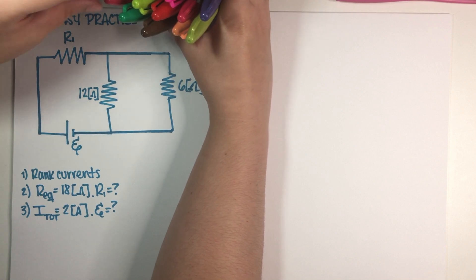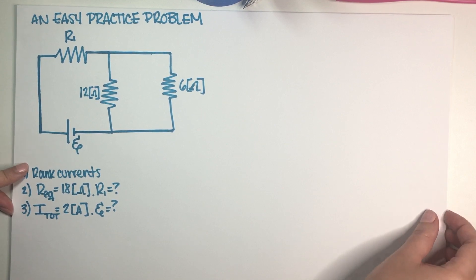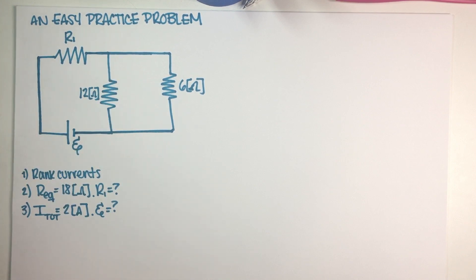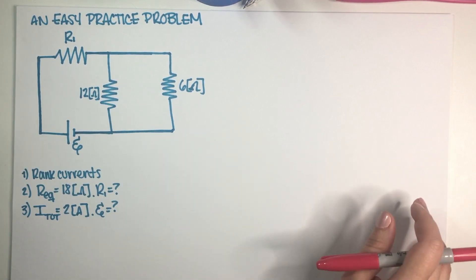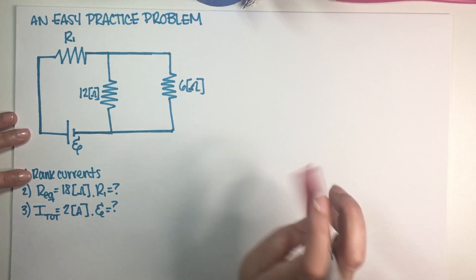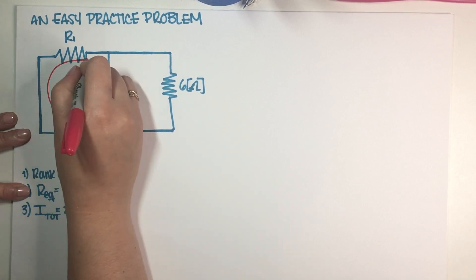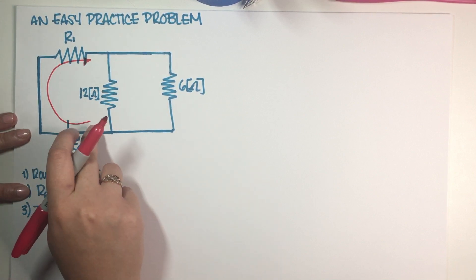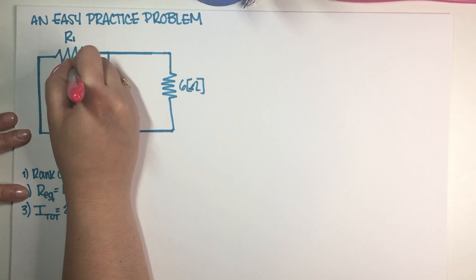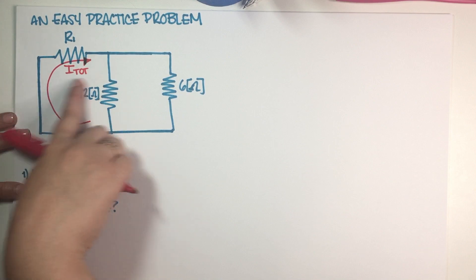The first thing I have to do is rank the currents in this circuit. You might think we need to find the unknown resistor first, but that's not the case. Let's figure out how many currents we have. We actually have three different currents: the total current, which is the one that crosses the battery. The current that crosses R1 is all of it — the entire total current.